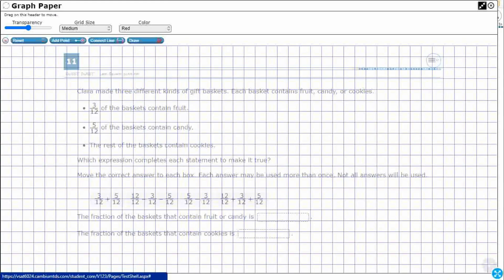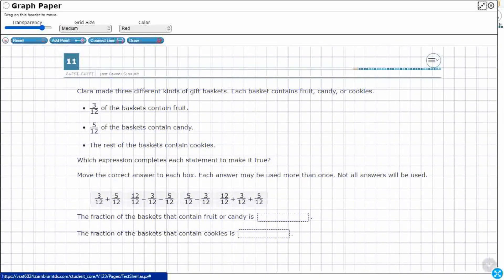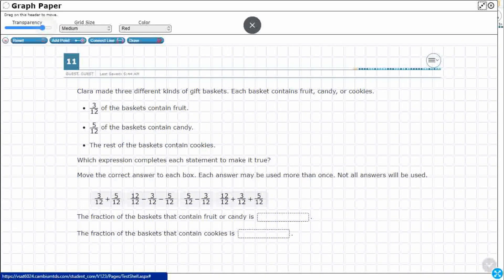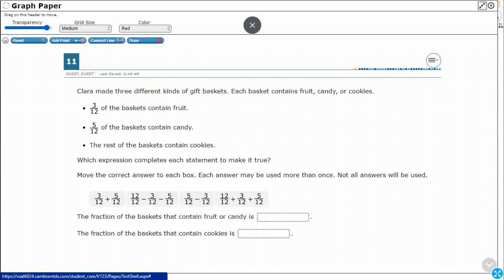I'm going to use my graph draw feature, expand it out, get a little bit more transparency so I can see what's happening behind there. So Clara is making three different types of gift baskets. Each gift basket contains fruit, candy, or cookies. I'm going to use a larger grid size. Let's work smarter, not harder.